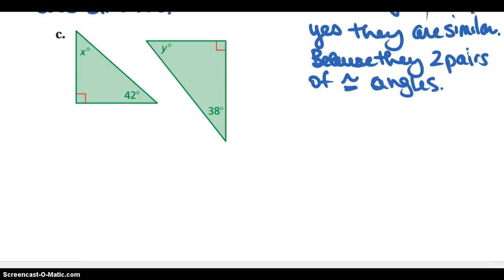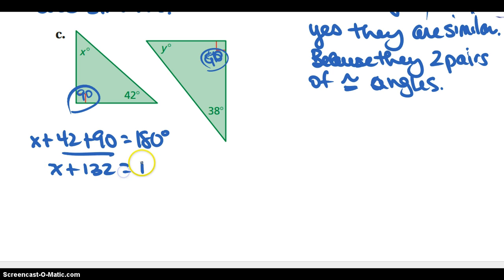Going to C. Remember I need two pairs. If I can tell that two pairs of angles are congruent, then I know the triangles are similar. Start with what you know. I'm going to fill this in as 90 and this one is 90. So that's one pair. Now I need to figure out, is X equal to 38 or Y equal to 42? I'm going to start with this first triangle: X plus 42 plus 90 equals 180. That missing angle X should come out to be 48 degrees.